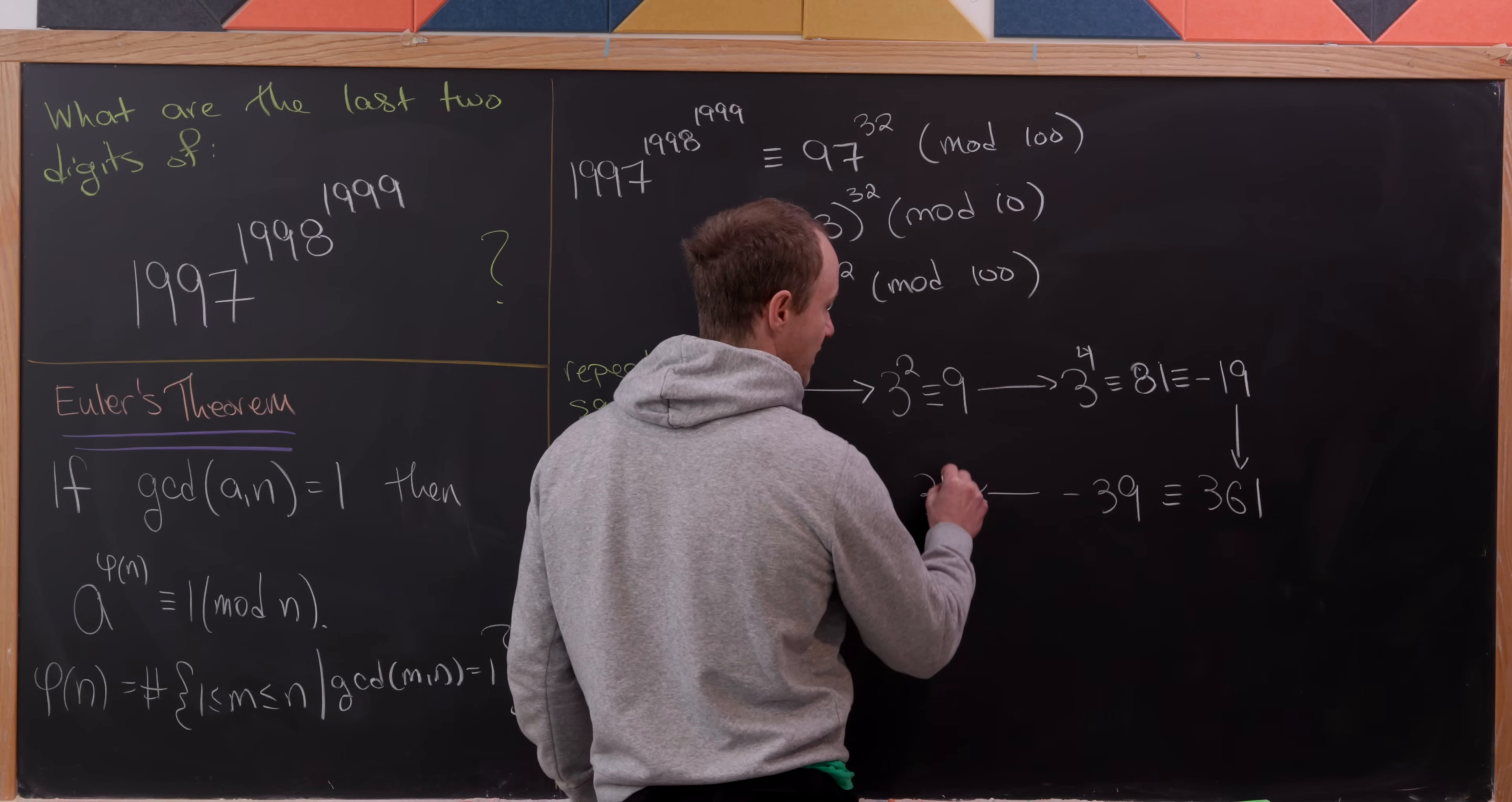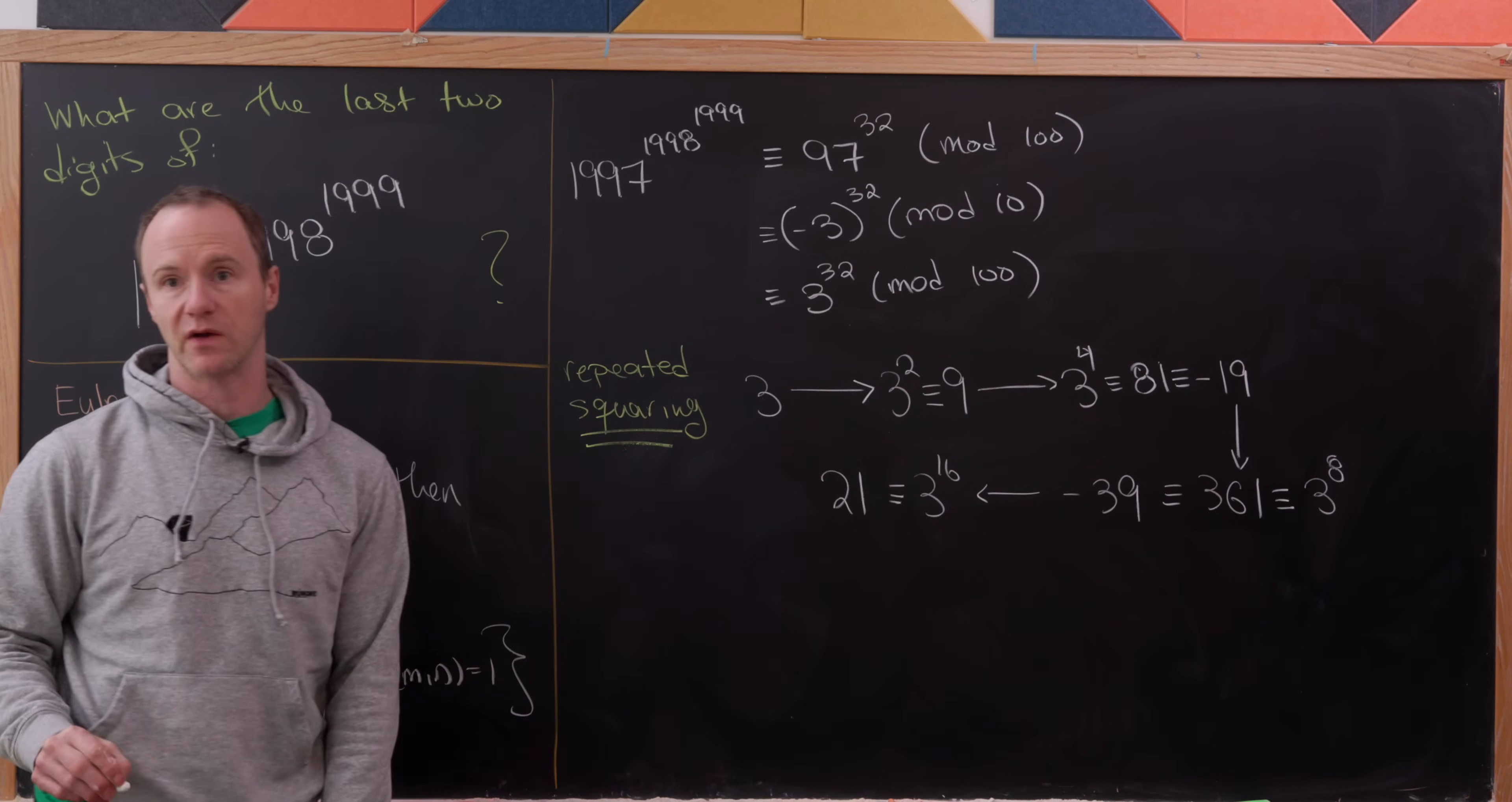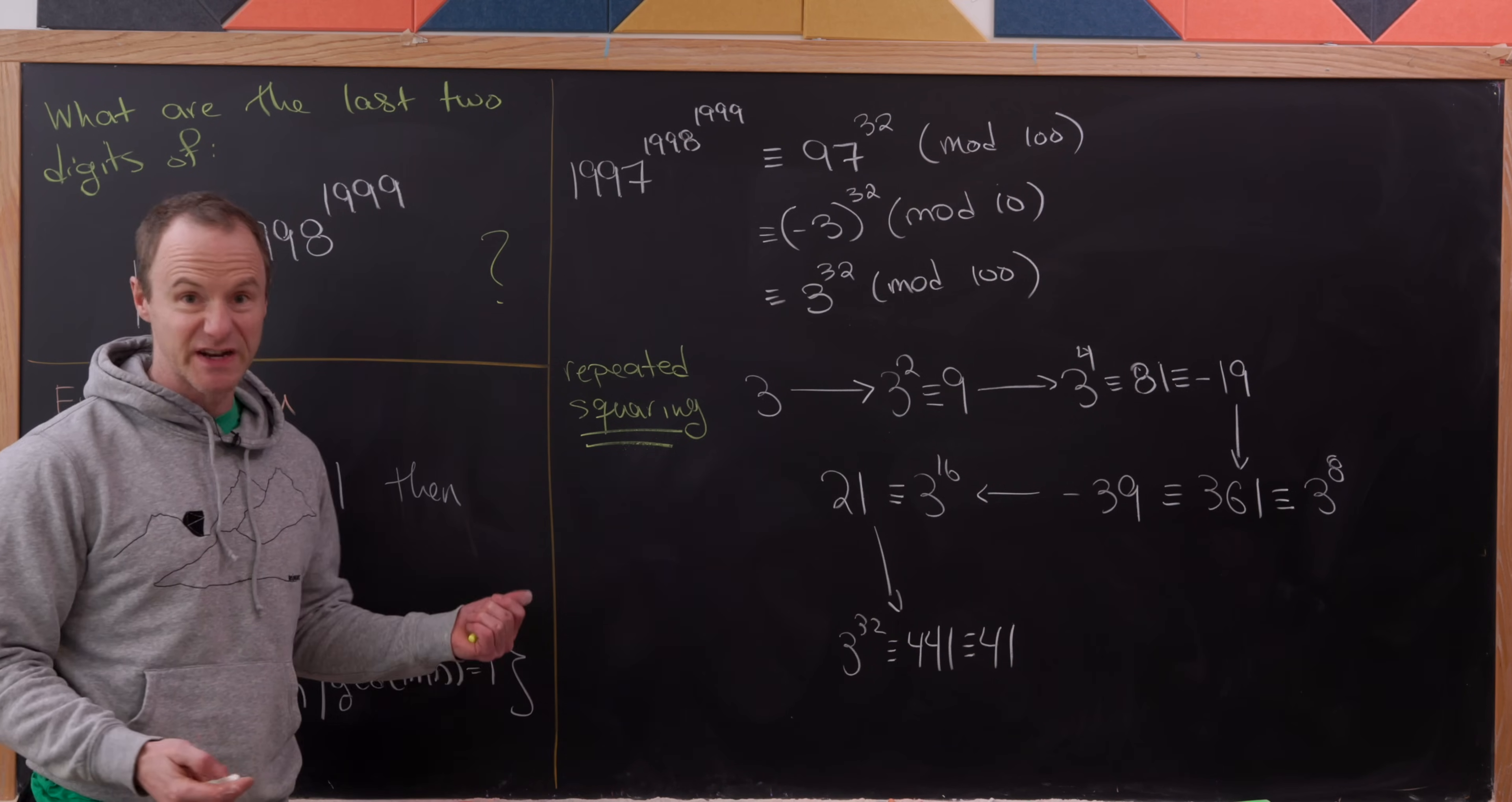If we square that, we get 3 to the 16, which is 3 to the 8 squared. Squaring 39 gives us 1521, congruent to 21 mod 100. Then we can square 21 and we'll get 3 to the 32, congruent to 441, which is congruent to 41 mod 100. But that finishes everything off.